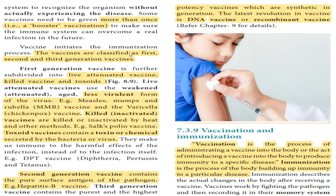According to the immunization process, vaccines are classified into three categories: first generation, second generation, and third generation. According to the nature of vaccines, they are classified as live vaccines, live attenuated vaccines, killed vaccines, and toxoid vaccines. These are the different categories of vaccines.